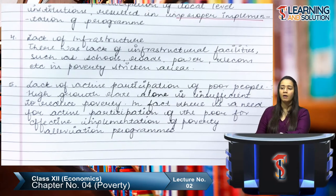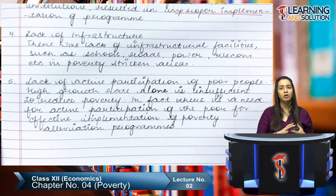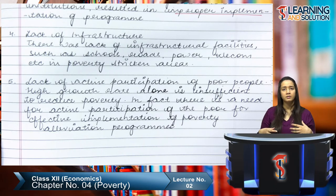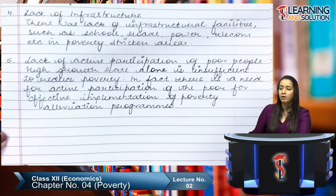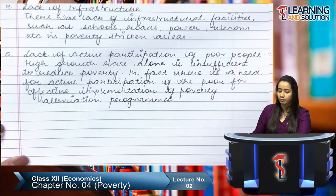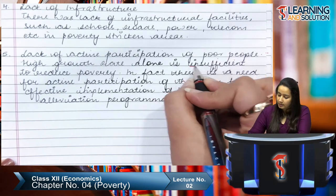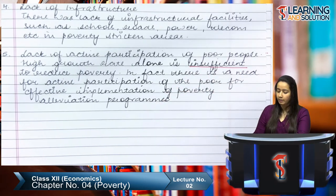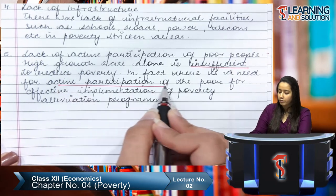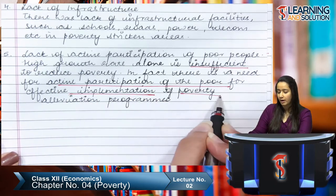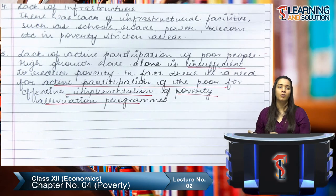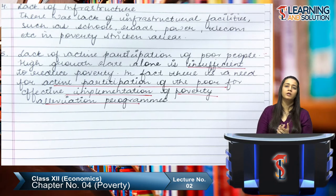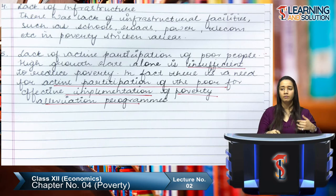Fourth, lack of infrastructure — there was a lack of infrastructure facilities such as schools, roads, power, and telecommunication, especially in the most poverty-stricken districts and villages. Fifth, lack of active participation of poor people — high growth rate alone is insufficient to reduce poverty; there is a need for active participation of the poor for the effective implementation of poverty alleviation programs. The weaker section must be given an upliftment and actively participate in implementation.